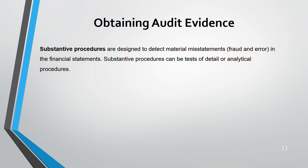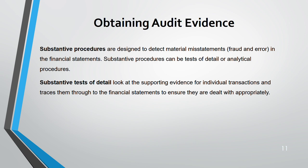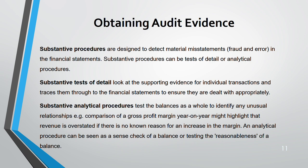Substantive procedure can be either test of detail or analytical procedure — there are two types. It is designed to detect material misstatement through fraud or error in the financial statements — nothing to do with controls. Test of detail means looking at one individual transaction, tracing it through the financial statements to ensure it has been dealt with correctly. Analytical procedure, on the other hand, looks at the overall balance — checking trends, calculating ratios to compare or see relationships.